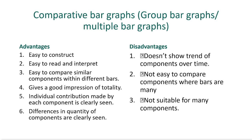The advantages of comparative bar graphs: it's easy to construct — we drew a bar graph in Form 1 — easy to read and interpret, easy to compare similar components within different bars, it gives a good impression of totality, individual contribution made by each component is clearly seen, and differences in quantity of components are also clearly seen. The disadvantages: doesn't show the trend of components over time, not easy to compare components where bars are many, and also not suitable for many components.